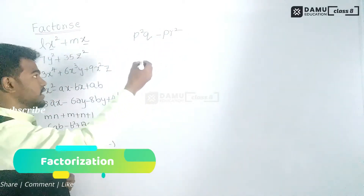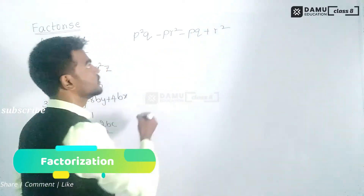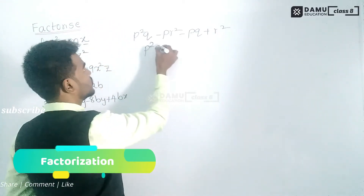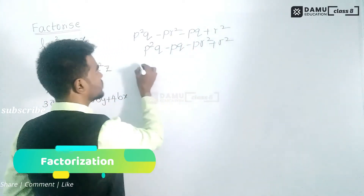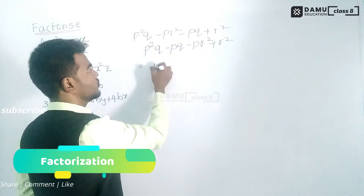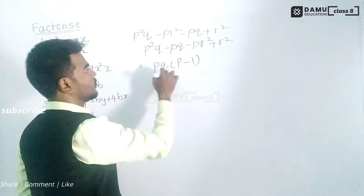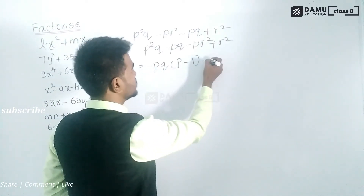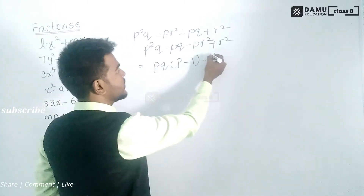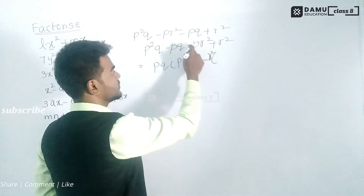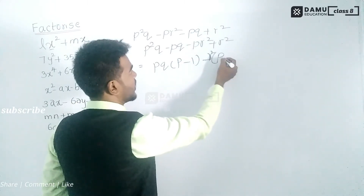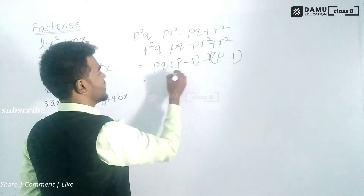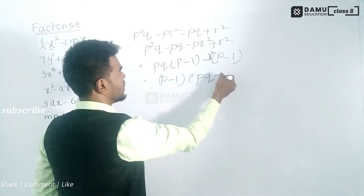The next question is p²q - pq - pr² + r². We group p²q - pq and -pr² + r². From p²q - pq, take pq common — actually take p common: we get p(pq - r²)... wait, from p²q - pq take p common to get p(pq - q), then from -r² terms. Taking (p - 1) as common: pq(p - 1) - r²(p - 1), giving the factorized form (p - 1)(pq - r²).